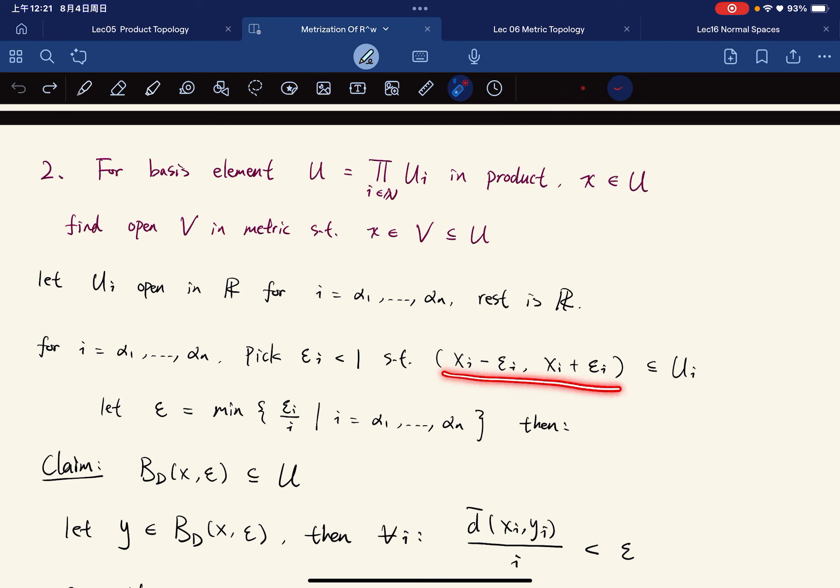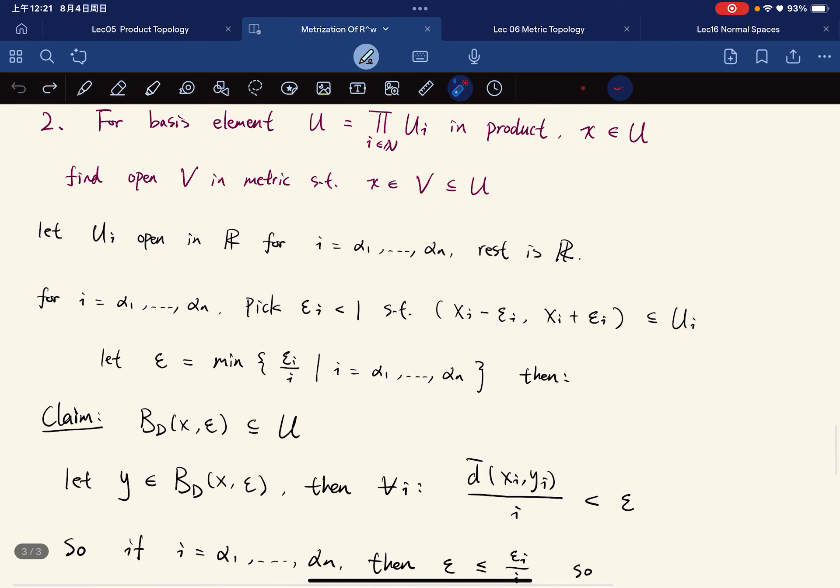Pick εᵢ less than 1, such that specifically for this component, we make this neighborhood contained in this Uᵢ, because Uᵢ is open in R. Like, we're just working with each component right now, and there's finitely many of them.